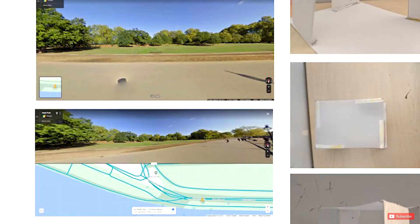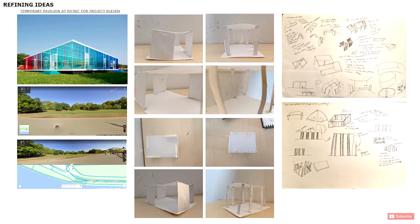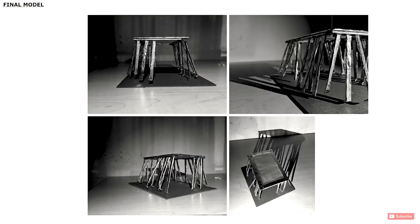I also selected the specific site, which is right next to the Serpentine Lake, and I did some more sketch modeling. This is my final model. I made it with cardboard and wrapped it with tin foil, and I used tracing paper for the top.